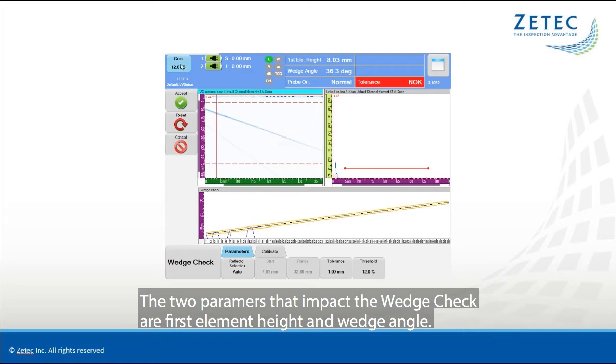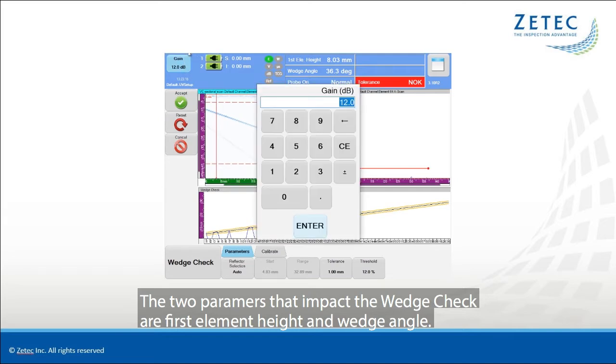The two parameters that impact the Wedge Check are First Element Height and Wedge Angle.